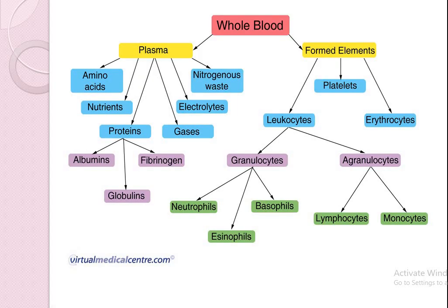This is a flow chart of the blood composition. Blood is composed of a liquid substance called plasma and elements called formed elements. The plasma contains amino acids, nutrients, proteins, gases, electrolytes, and nitrogenous waste.